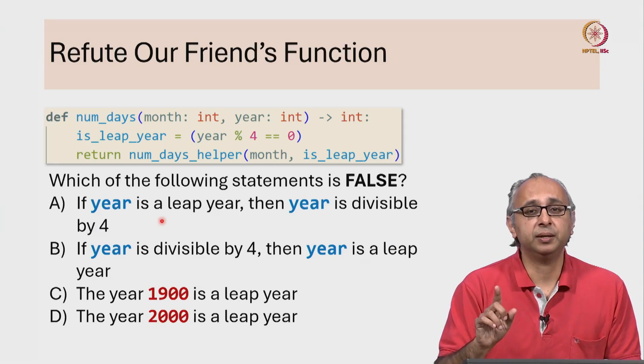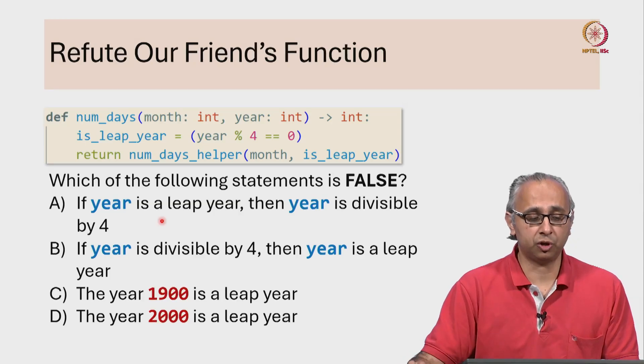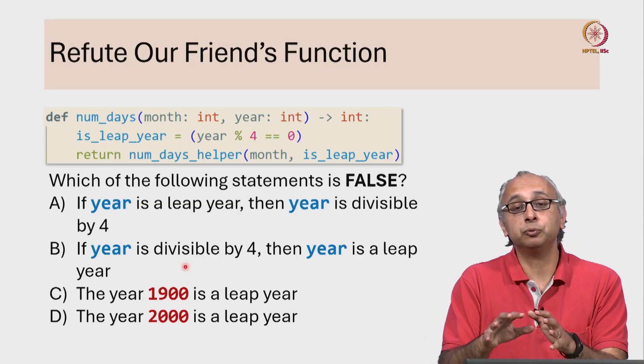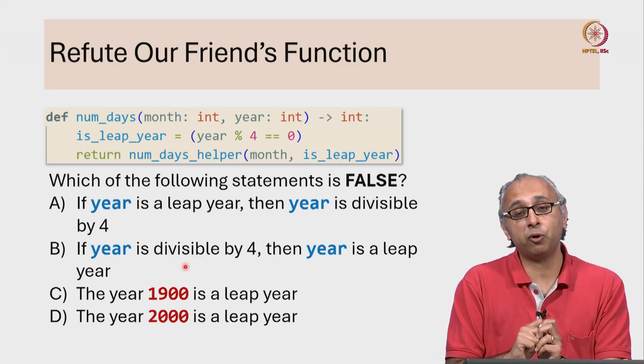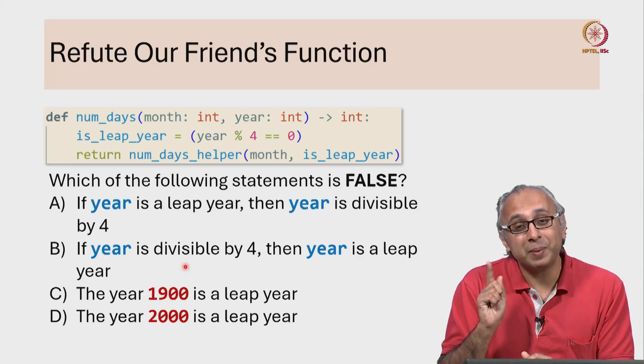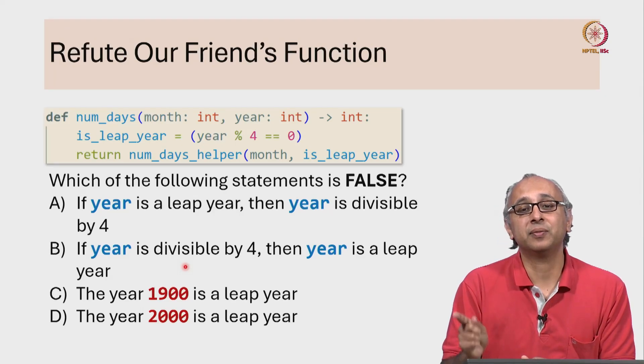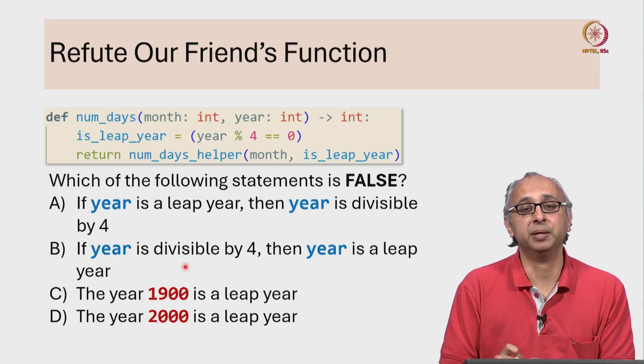But interestingly, the converse is not true. If I tell you that I have a year that is divisible by 4, that does not automatically mean that that year is a leap year.